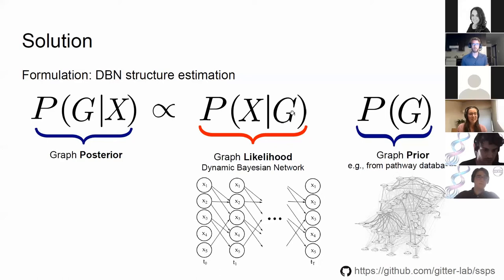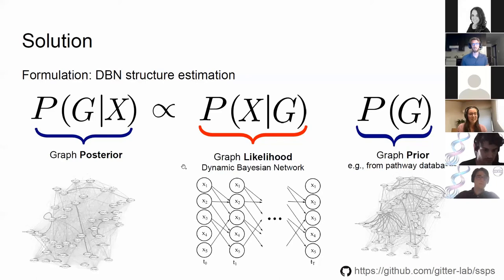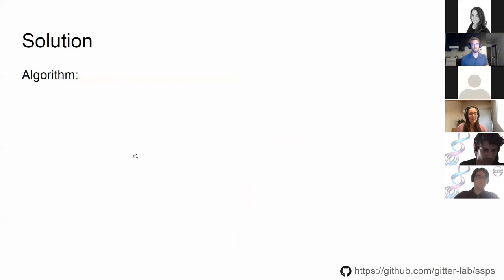Multiplying the likelihood and the prior gives us a graph posterior distribution over graph structures. This posterior allows us to make probabilistic statements about the underlying true signaling pathway. We need an algorithm to help us compute these posterior probabilities.